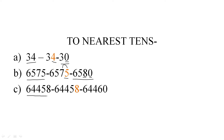Let us take another example. If you are doing rounding off the number 64,458, then you will check the place of 1s, which is 8. Since 8 is greater than 5, you will add 1 to the left digit: 5 plus 1 equals 6, and 8 will be converted into 0. You will get the number 64,460.